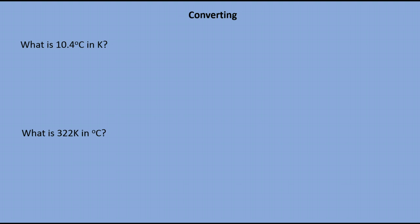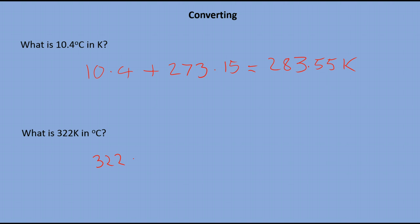Let's have a quick practice. What would 10.4°C be in Kelvin? Well, I know that 0°C occurs at 273 Kelvin, so 10.4°C is going to be 10.4 plus 273.15 Kelvin, which gives a temperature of 283.55 Kelvin. Going the other way, from Kelvin to degrees Celsius: 322 Kelvin minus 273.15 gives an answer of 48.85°C.